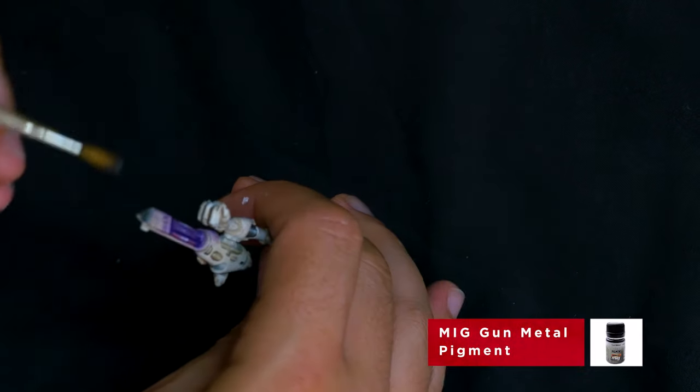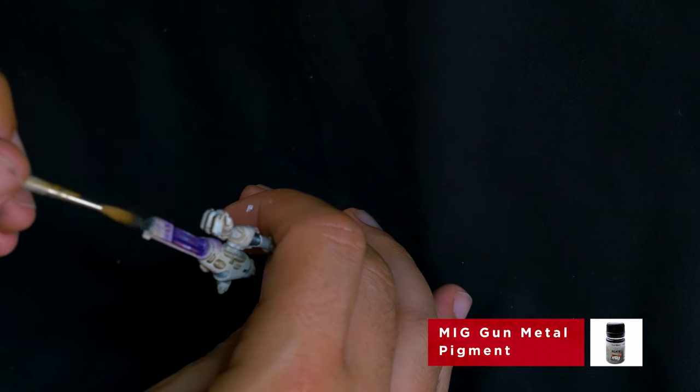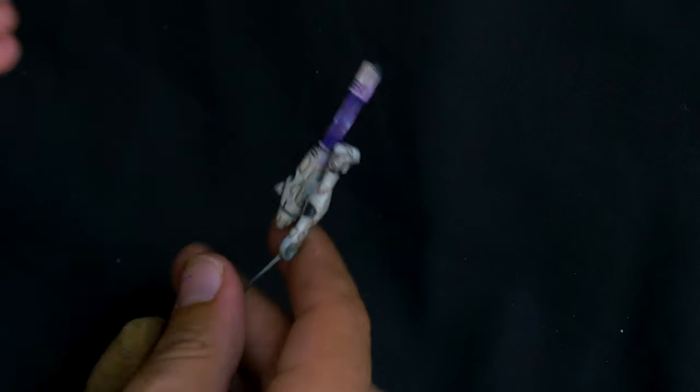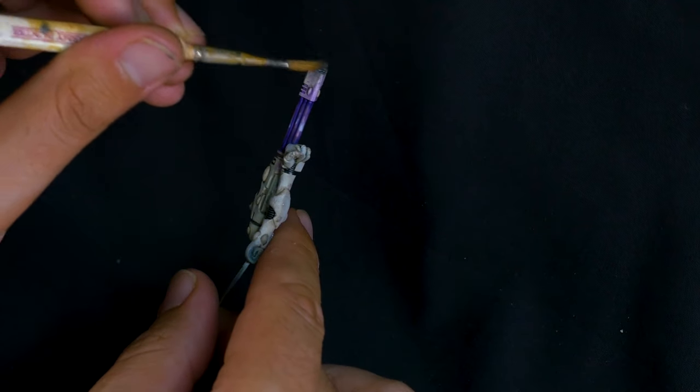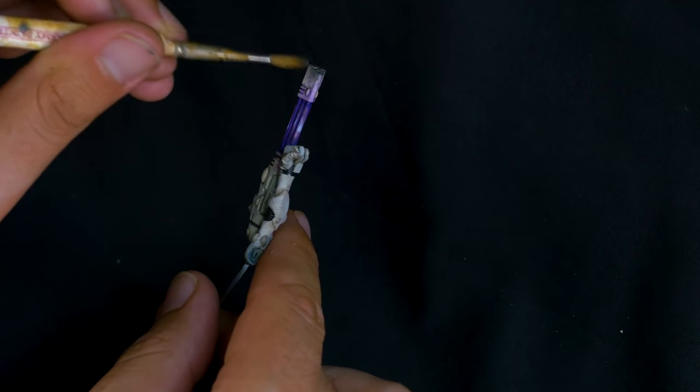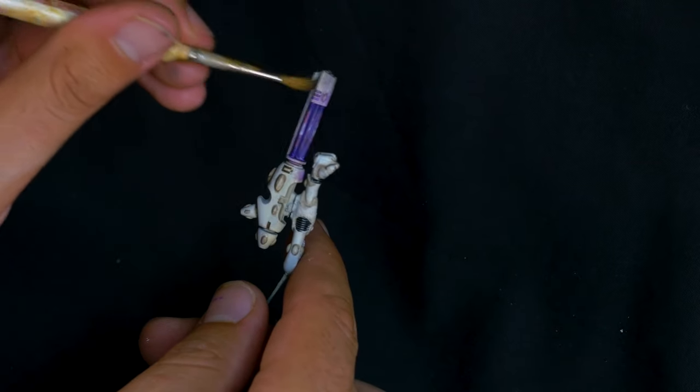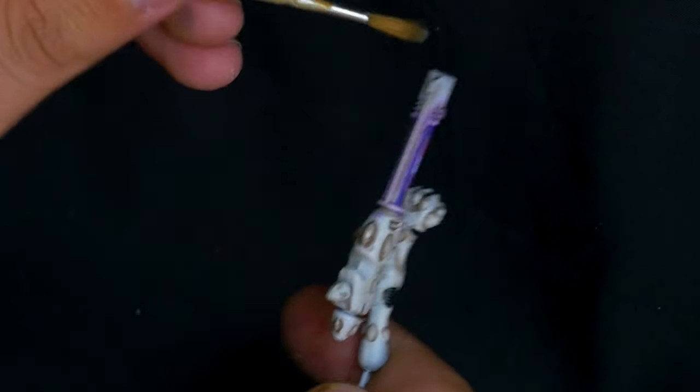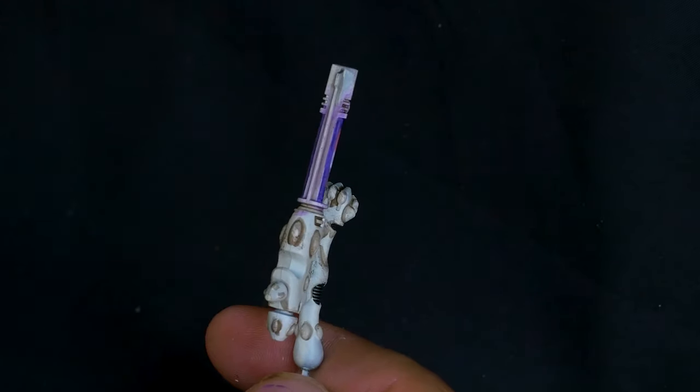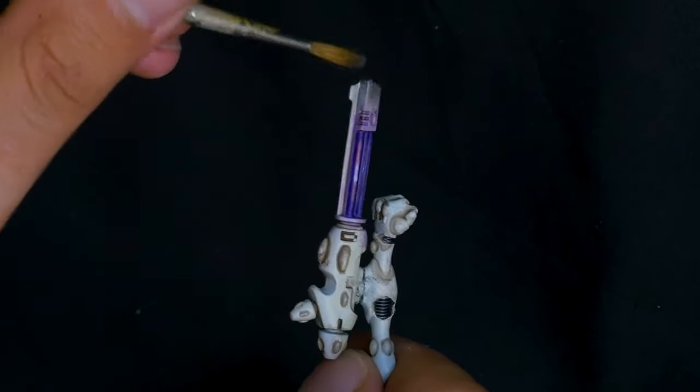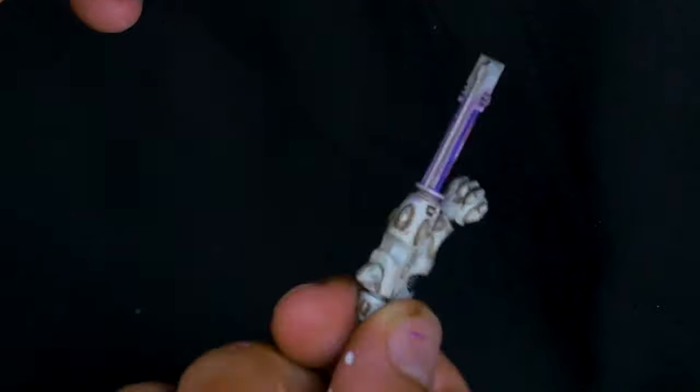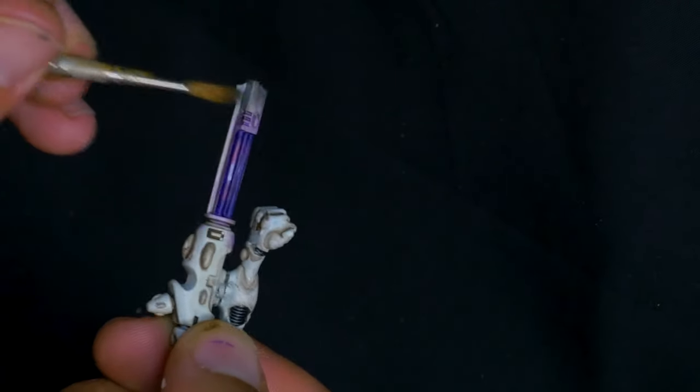Now again with more grimy effects, I'm going to use this MIG gunmetal pigment, and I'm going to use an old brush for this. I'm just going to keep it dry, pick a little bit of it out of the pot, and just drag it over the tops of all the weapons just to give a few little impressions of burn marks. The idea of this grimdark effect is to give the impression that this model has been standing in a battlefield for a long time, so you're guessing those weapons have been discharged a number of times, so it's good to make them look used.